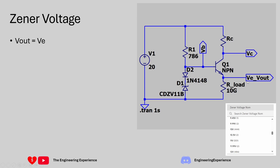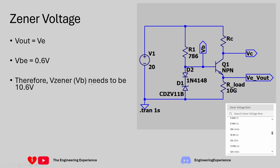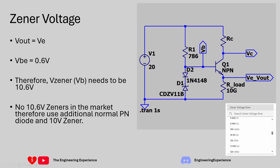Vout and VE are the same thing - VE being the emitter voltage of this NPN BJT. We have the base, the collector voltage, and the emitter voltage which is also the output voltage. VBE is 0.6 volts, therefore the base voltage becomes 10.6 volts, which we achieve with the additional PN diode. This allows us to select a 10 volt Zener and a standard silicon diode to get the 10.6 volts needed on the base.